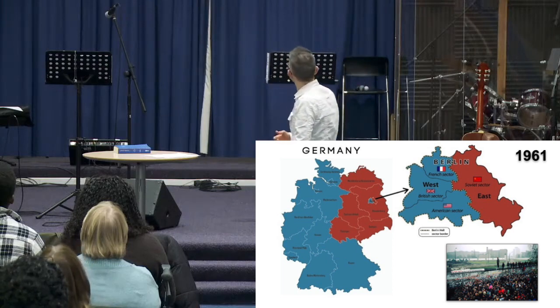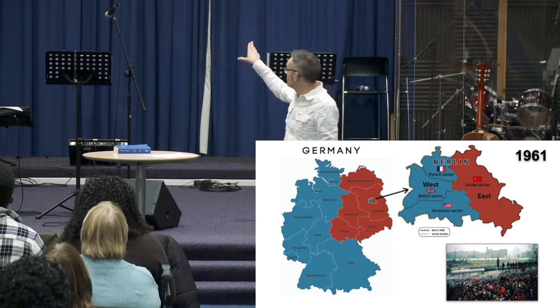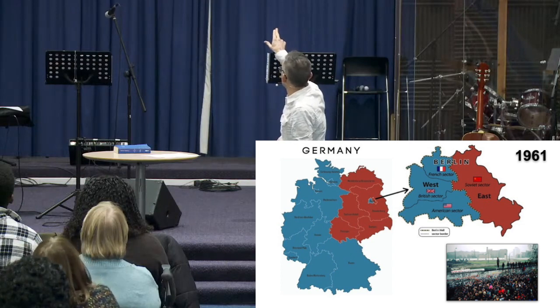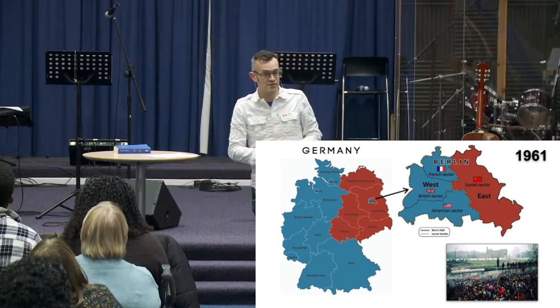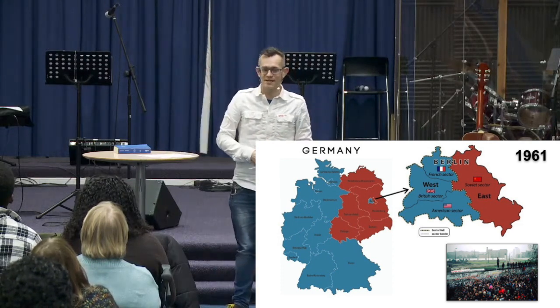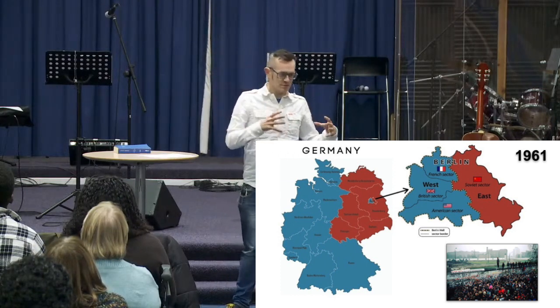The Berlin Wall had its origins at the end of World War II, when Germany was carved up into four pieces, being occupied by Allied powers. You can see Germany here, carved up into four different areas: American sector, British sector, French sector, and the red part was governed by the USSR, the Soviet area. That was the agreement at the end of the Second World War, but within Germany, the seat of government was Berlin.